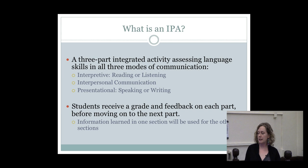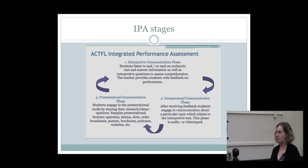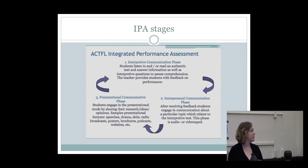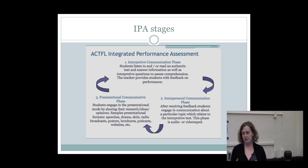Students receive a grade and feedback on each part before moving on to the next part, and the information learned in one section will be used for the other sections. Here's a helpful diagram that illustrates the stages or the three parts of an IPA. The students begin with the interpretive communication phase, where they listen to and/or read an authentic text and then answer informational as well as interpretive questions assessing their comprehension.